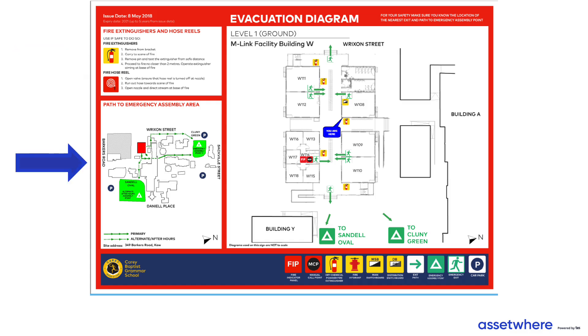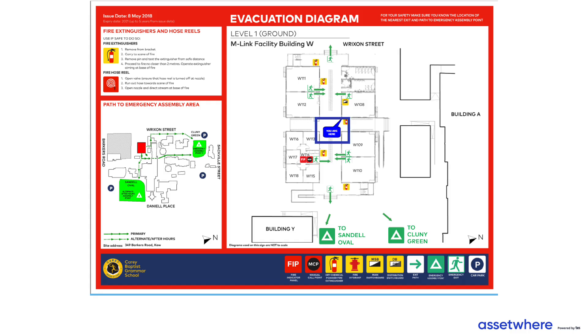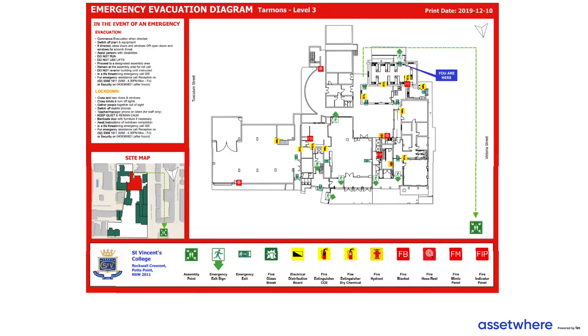The key map highlights the building where the room is located in red and the evacuation areas in green. The site map shows a 'you are here' label and also exit points.